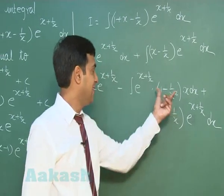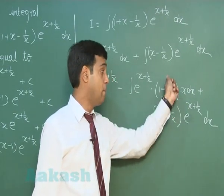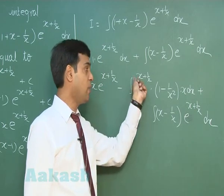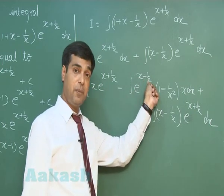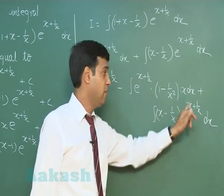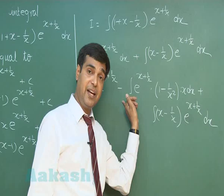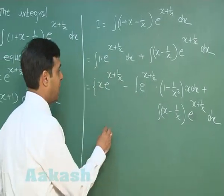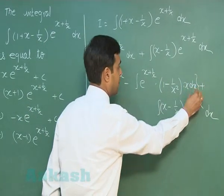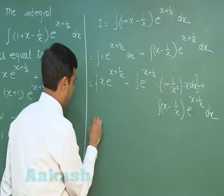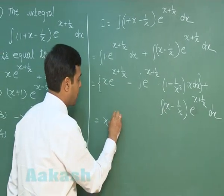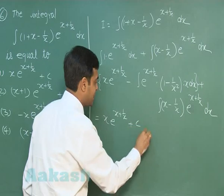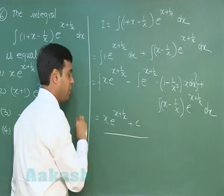We can clearly see this resulting term is (x minus 1/x) multiplied with e^(x + 1/x), which has the opposite sign to the second integral. So these two terms cancel out, and we are left with x · e^(x + 1/x) plus the constant of integration.